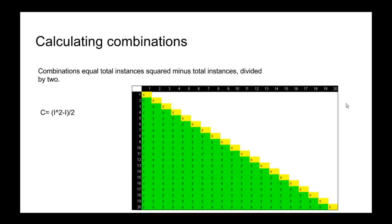So if we do that mathematically, combinations is equal to the total instances squared minus the total instances divided by 2, and here's the formula.